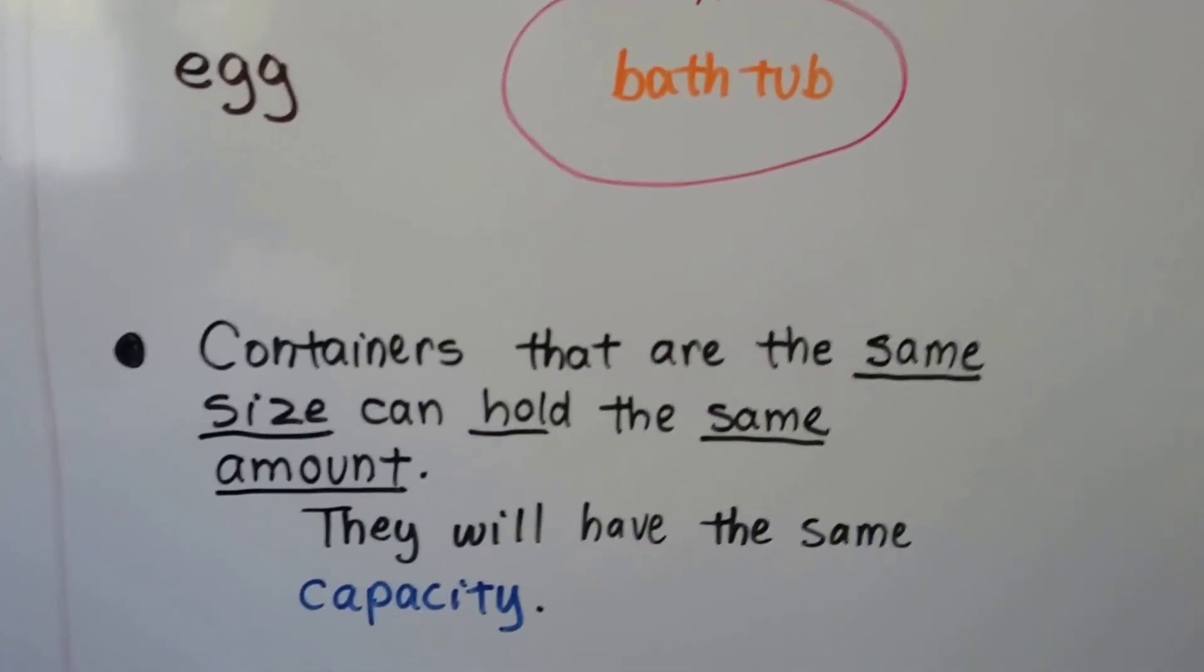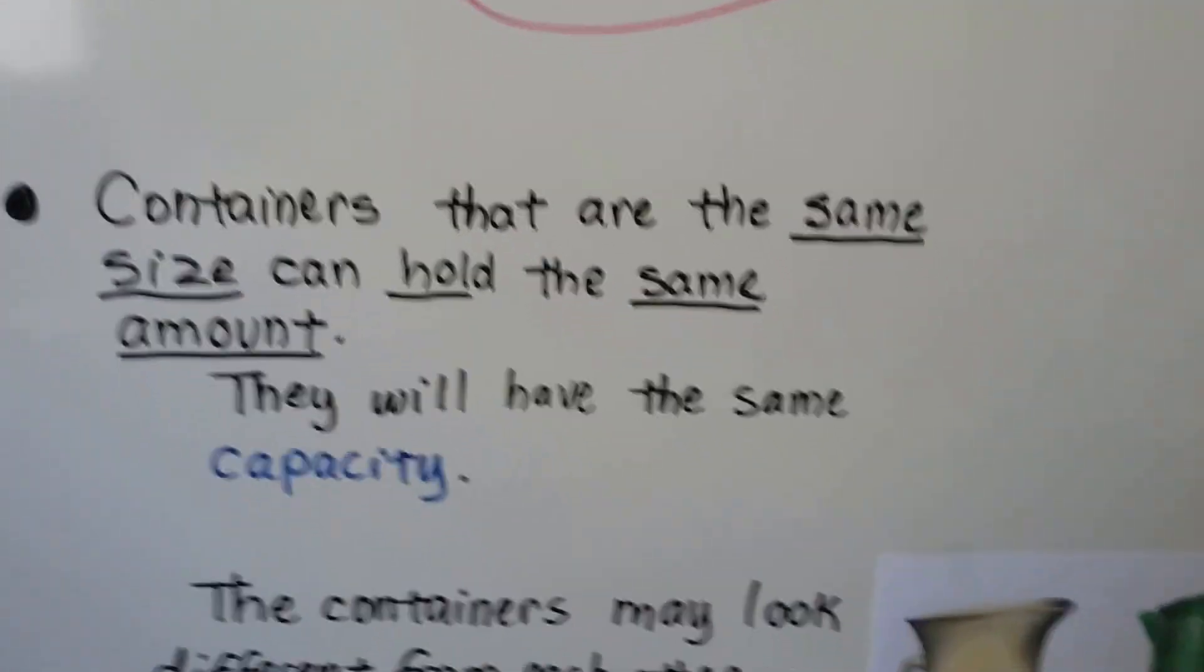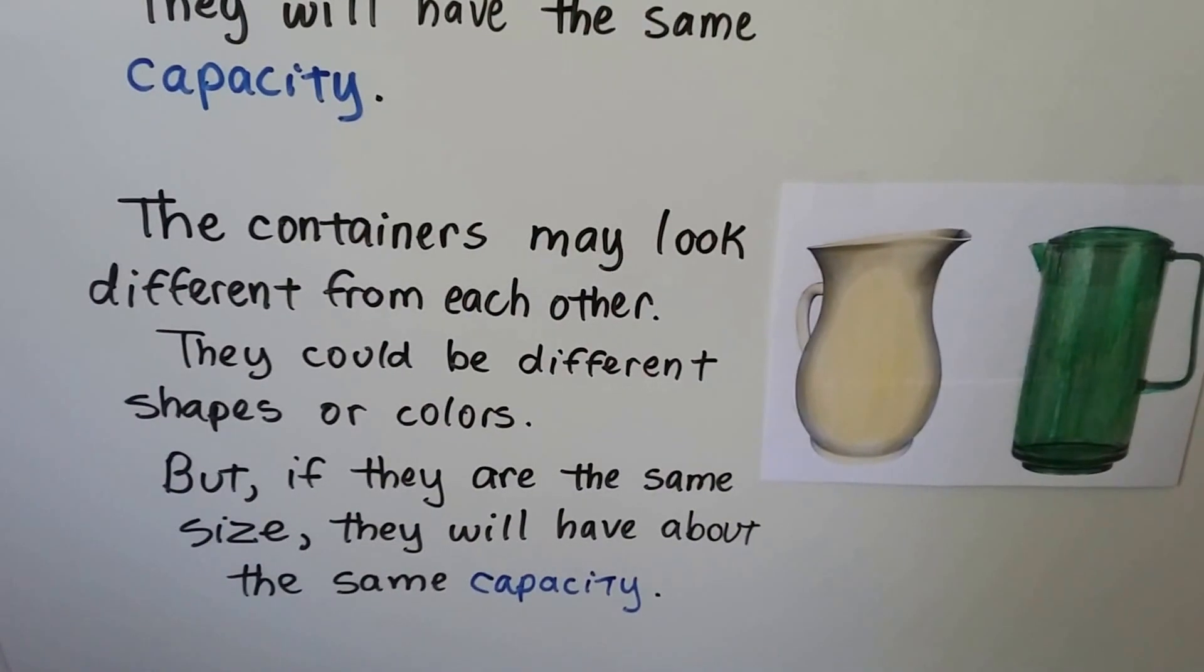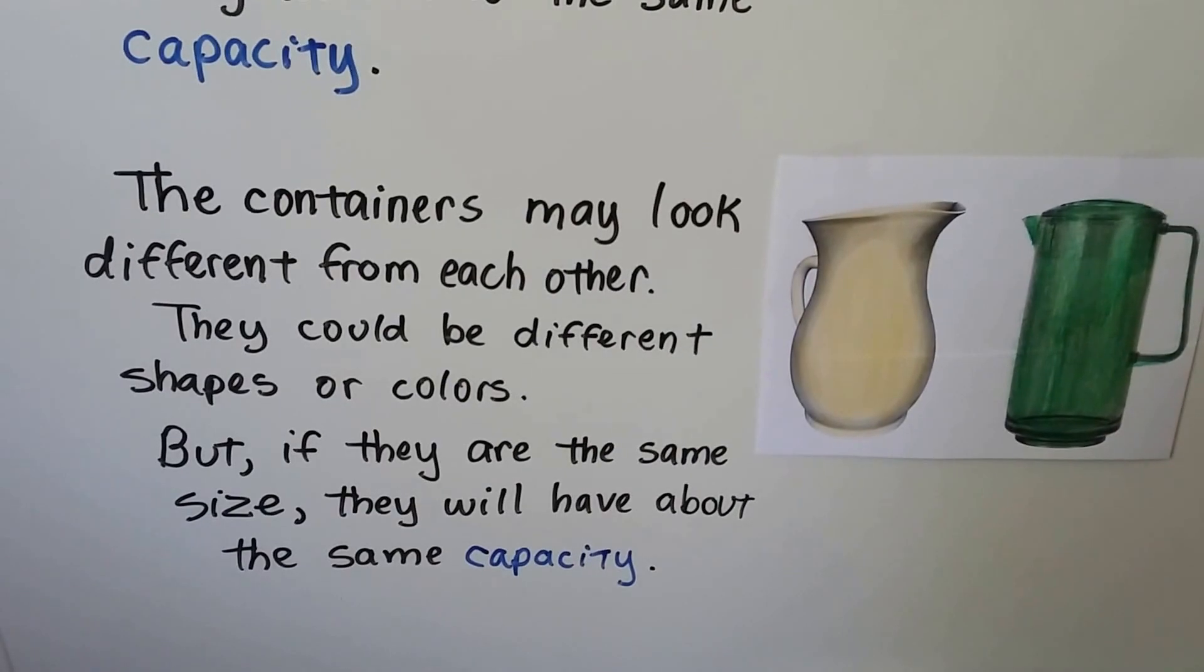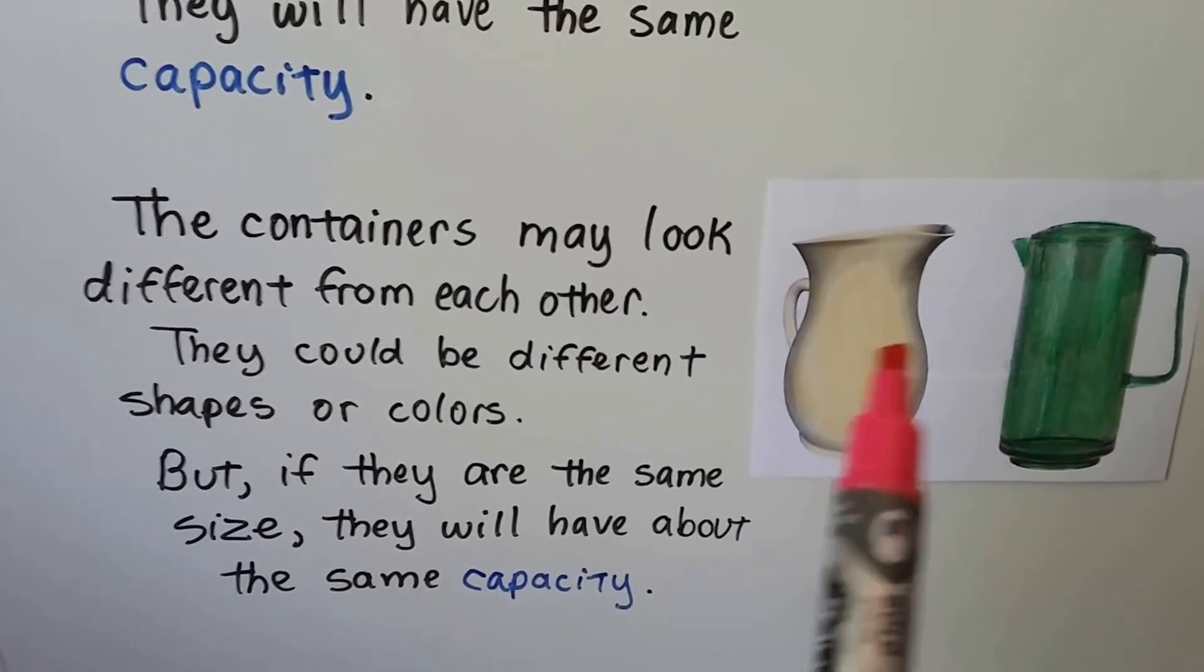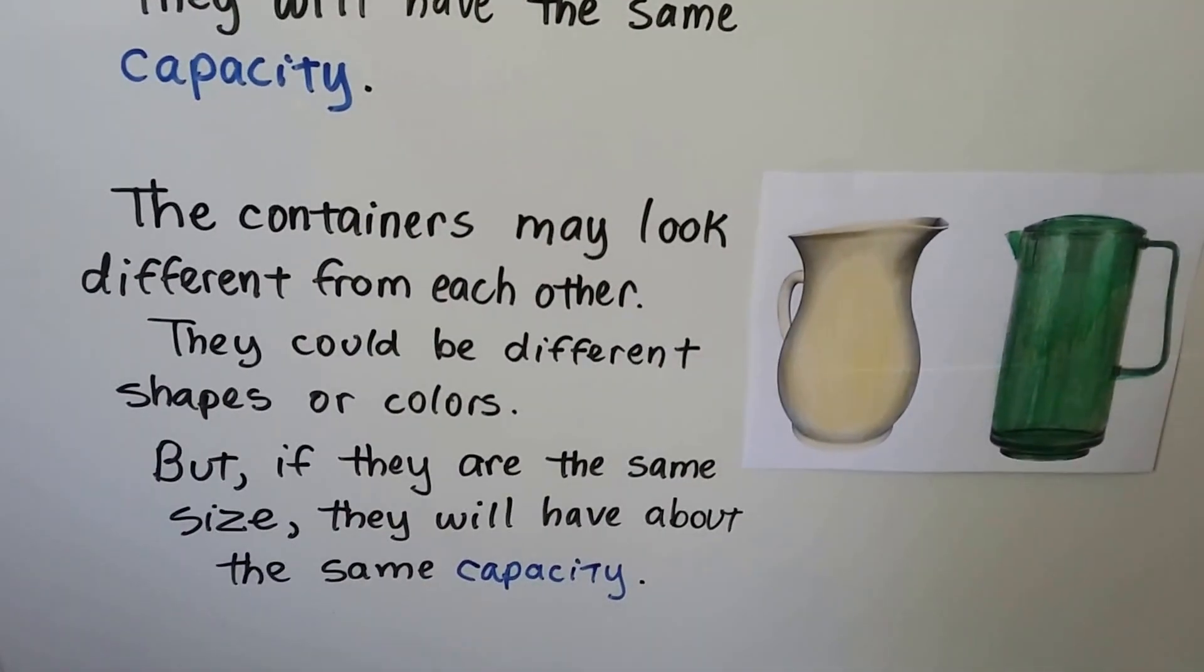And containers that are the same size can hold the same amount. They'll have the same capacity. And the containers may look different from each other. They could be different shapes or colors. But if they're the same size, they'll have about the same capacity. So even though these two pitchers don't look exactly alike, they're about the same size, so they have about the same capacity.